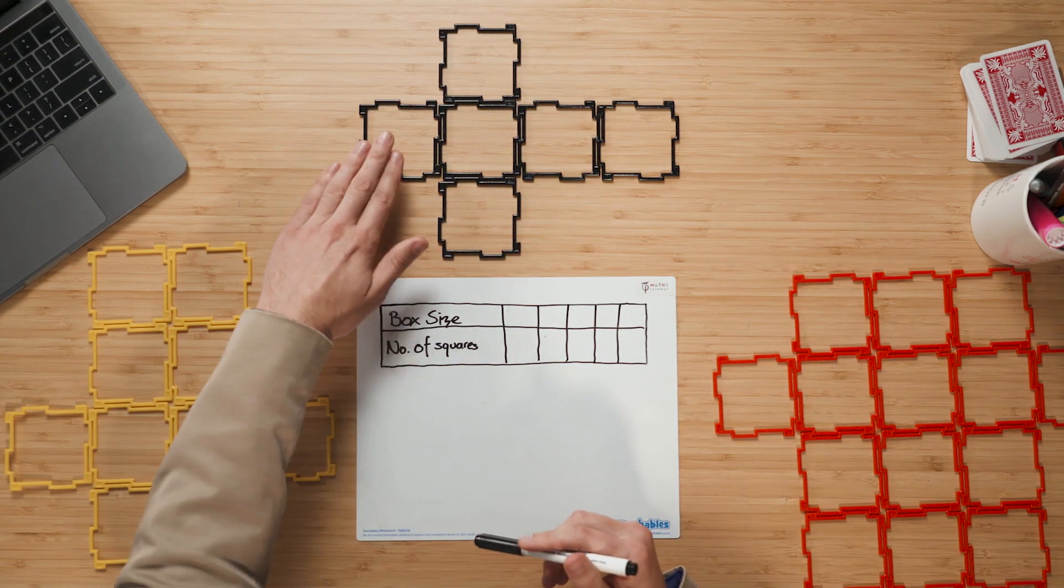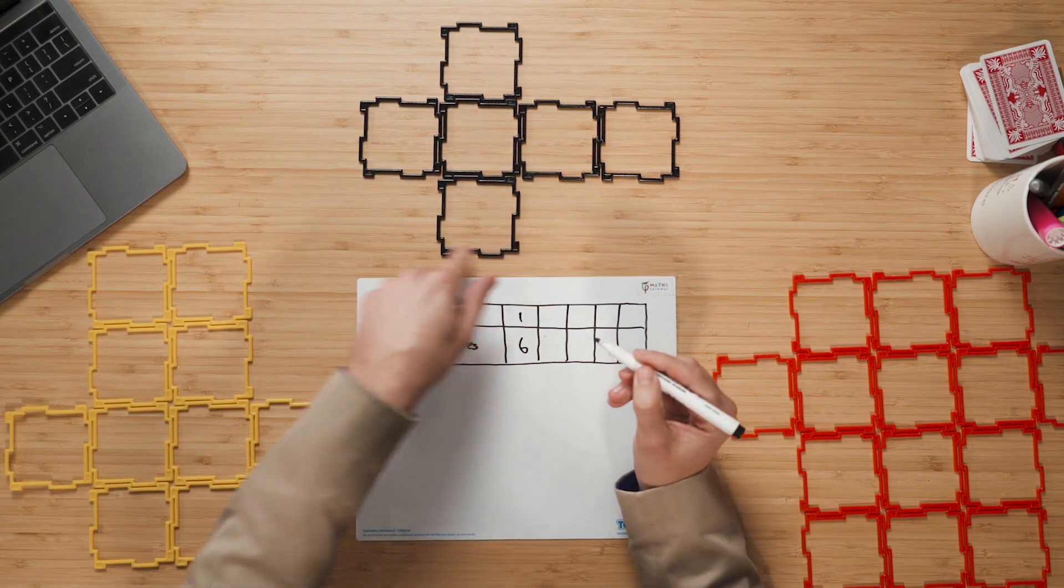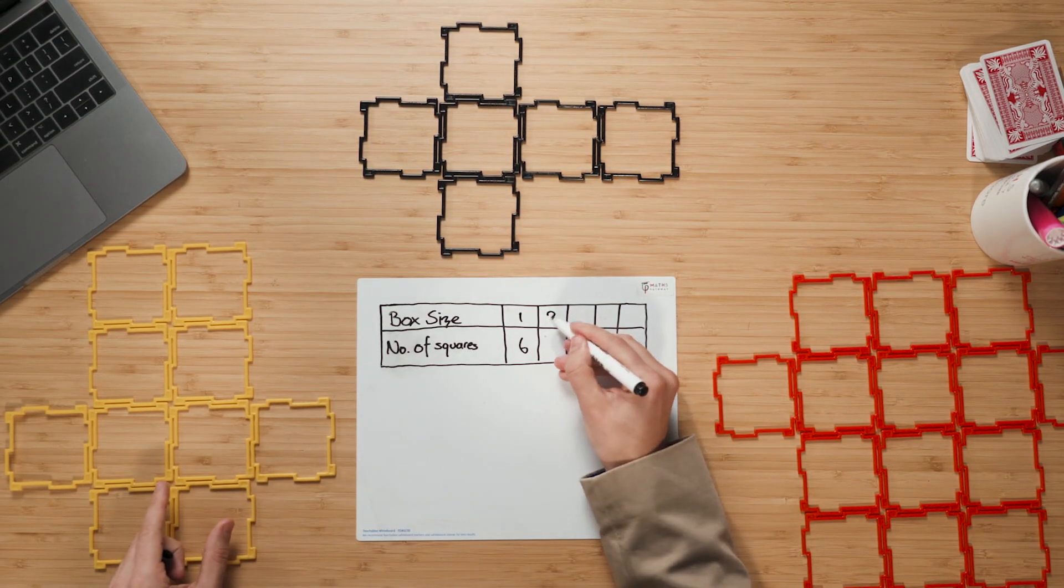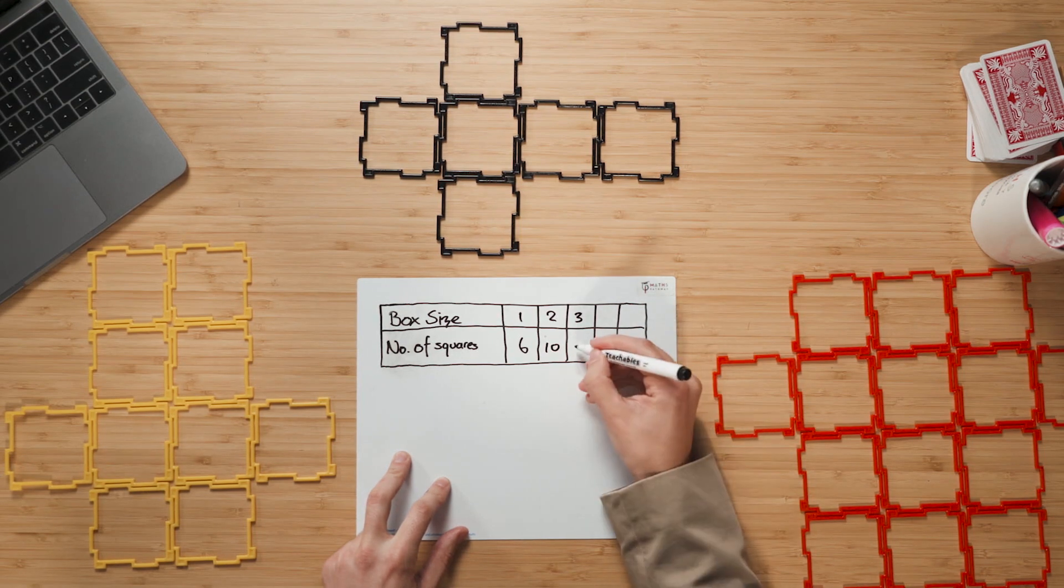Now if we think about this, my size one box here would have six squares, as you can see. My size two box had ten squares. And my size three box here in the red had 14.